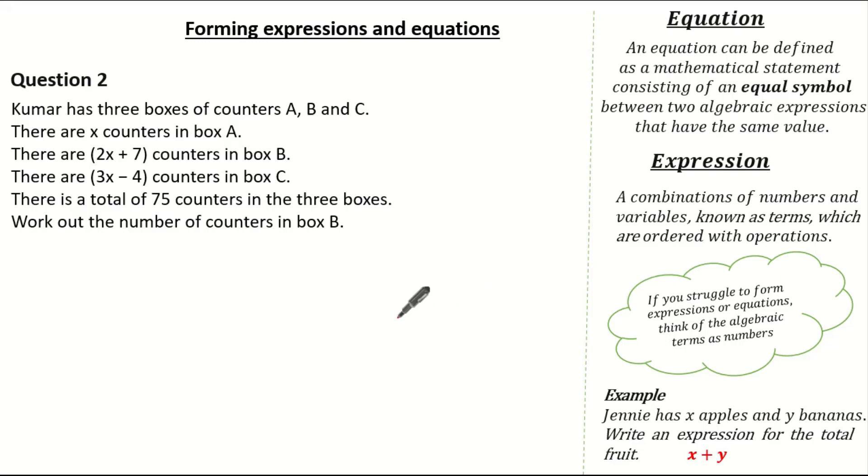So remember, always summarize what we know. We know we have three boxes, A, B and C. And we know in box A we have x counters. In box B we have 2x add 7 counters. And in box C we have 3x minus 4 counters. Now we also know the total number of counters is 75. So let's form an equation. We know 75 would give us the sum of all of these expressions. So 75 is equal to x plus 2x plus 7 plus 3x minus 4.